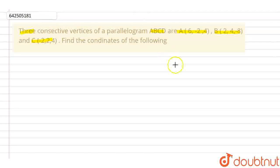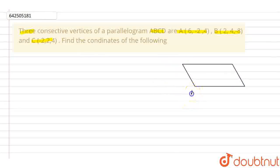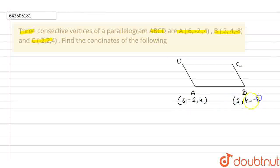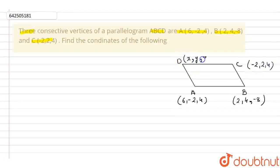First of all, we will make up the figure of this particular question. We have a parallelogram ABCD. This is vertex A, this is B, this is C and this is vertex D, which we need to find out. Vertex A is (6, -2, 4), vertex B is (2, 4, -8) and vertex C is (-2, 2, 4), and let vertex D be (x, y, z).